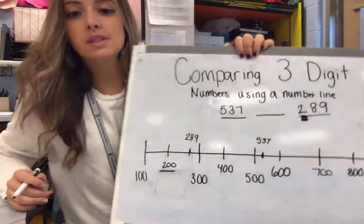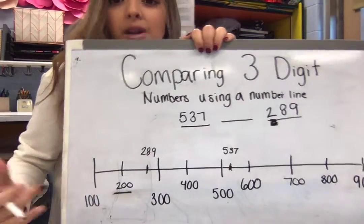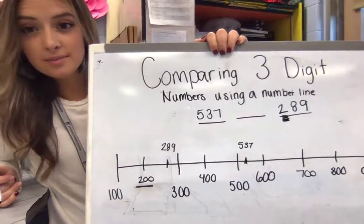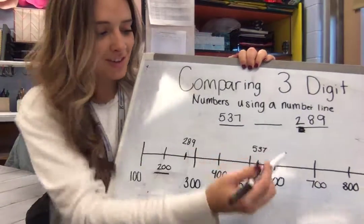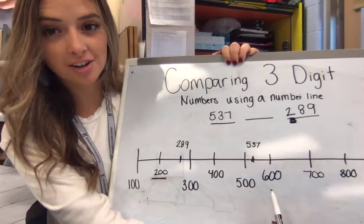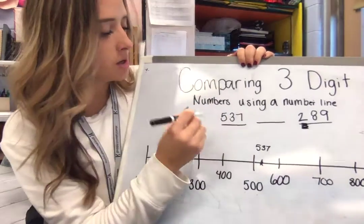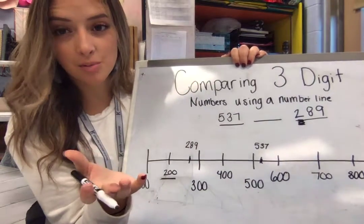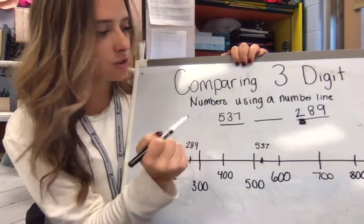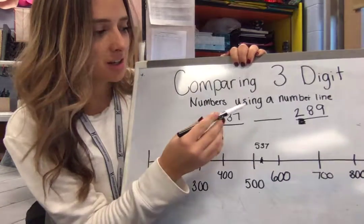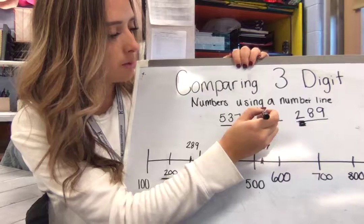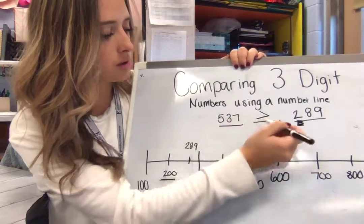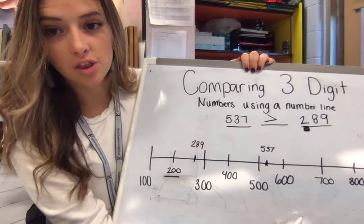Now that I've put both of these numbers on my number line, it's pretty easy to see which one's greater, right? Which one do you think is greater? 537. It's higher on our number line. Our number line goes up. So, if I have the option, I'd rather eat 537 cookies rather than 289. You always need more cookies, right? So, I'm going to put my mouth towards 537.